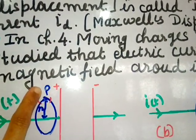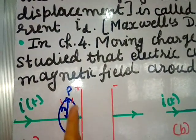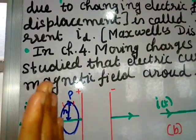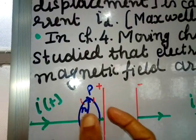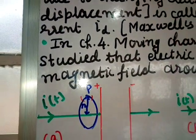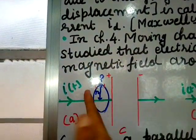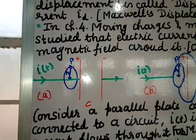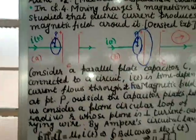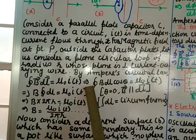We consider a loop of radius r perpendicular to the wire. Consider a small element dl of this loop. By the right-hand thumb rule, if current is flowing in this direction, the magnetic field will be in the same direction as dl — they are parallel to each other. By Ampere's circular law: ∮B·dl = μ₀i(t).